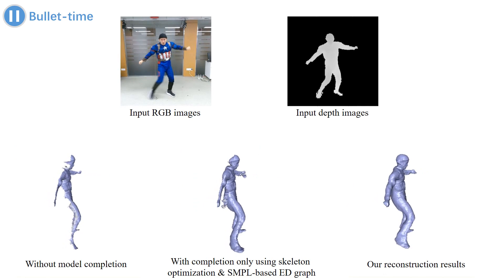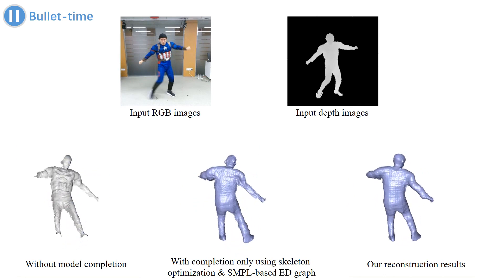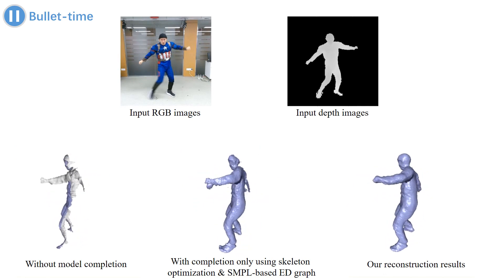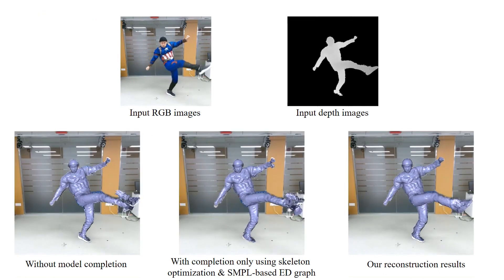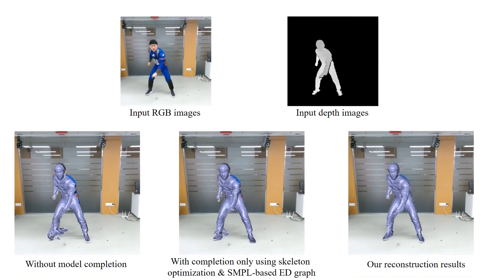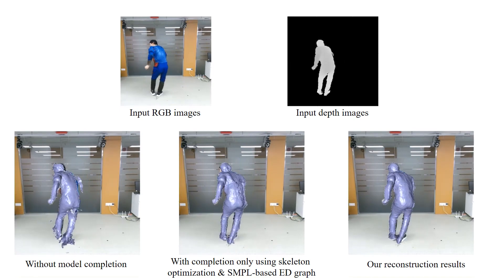Second, a human initialization scheme can also help obtain a watertight and fine-detailed human mesh and enable more robust motion tracking.